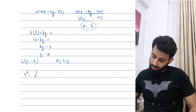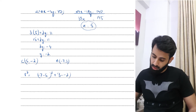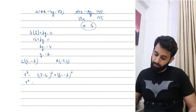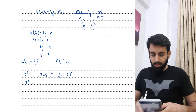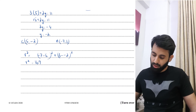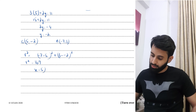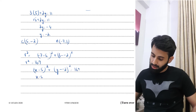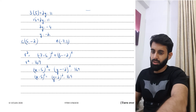Using point A(-7, 3) to find the radius: r² = (-7 - 5)² + (3 - (-2))² = (-12)² + (5)² = 144 + 25 = 169. So r² = 169. The equation of the circle is (x - 5)² + (y + 2)² = 169.